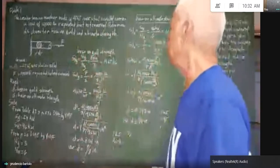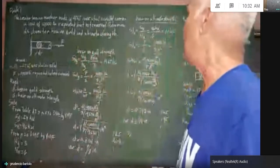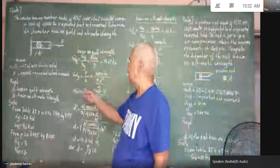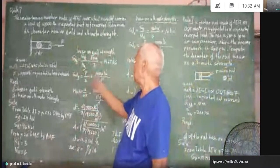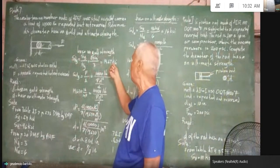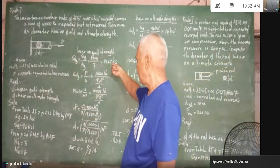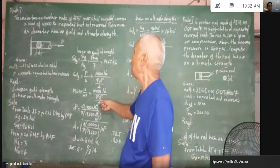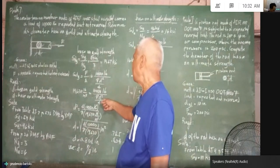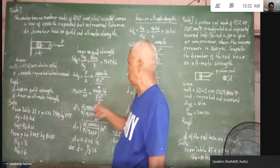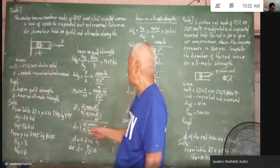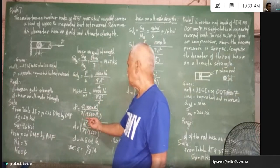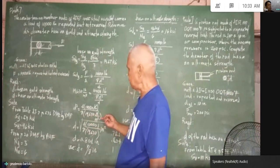From the equation design stress equals F over A, we have 19,670 pounds per inch squared equal to 10,000 pounds over the cross-sectional area pi D-squared over 4. So D-squared equals 4 times 10,000 pounds divided by pi multiplied by 19,670 pounds per inch squared.